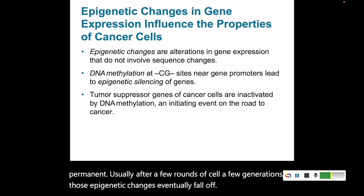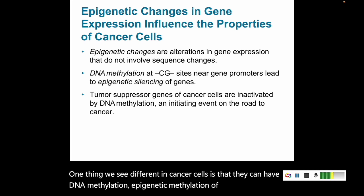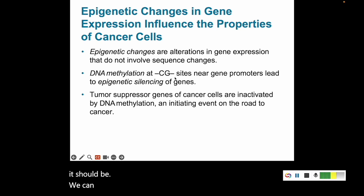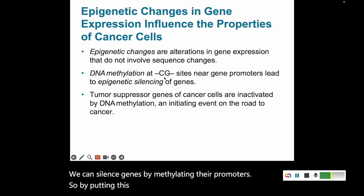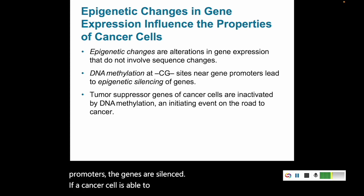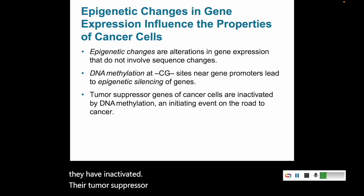One thing we see in cancer cells is that they can have DNA methylation — epigenetic methylation — of genes differently than it should be. We can silence genes by methylating their promoters. By putting a methyl group on CG sites at their promoters, the genes are silenced. If a cancer cell is able to do this on a tumor suppressor gene, then it has inactivated that tumor suppressor gene, which is going to be an initiatory event to developing cancer.